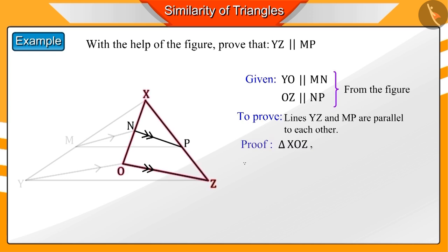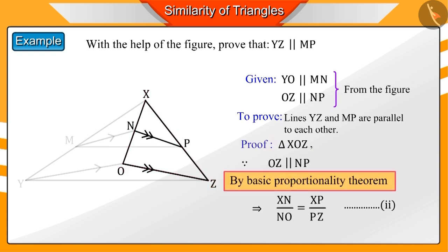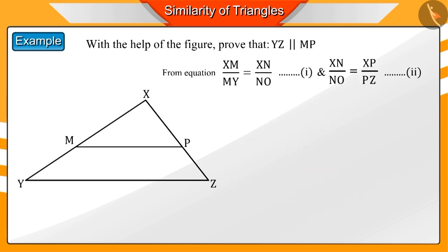Similarly we can derive equation 2 from the triangle XOZ. From equation 1 and 2 we get XM by MY equals XP by PZ, which we represent by equation 3.